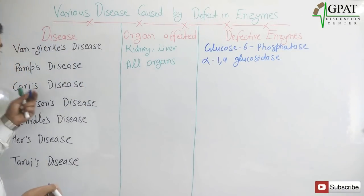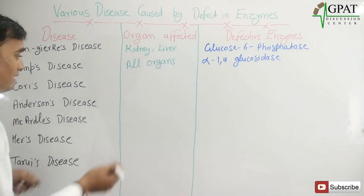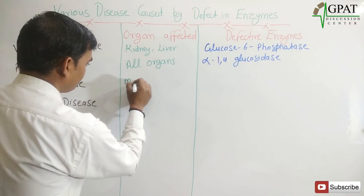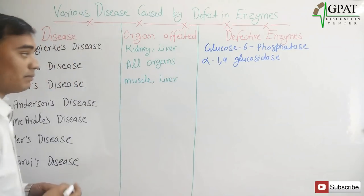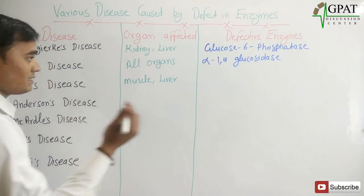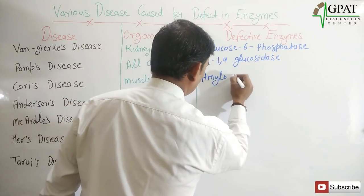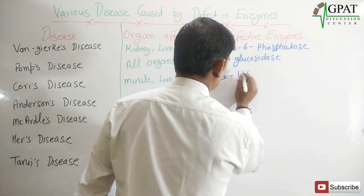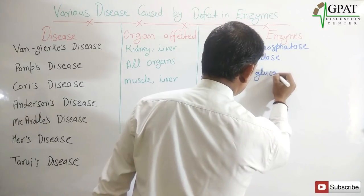Next, Cori disease. Cori disease affects all organs, but mainly muscles and liver. The enzyme responsible for Cori disease is amylo-1,6-glucosidase.